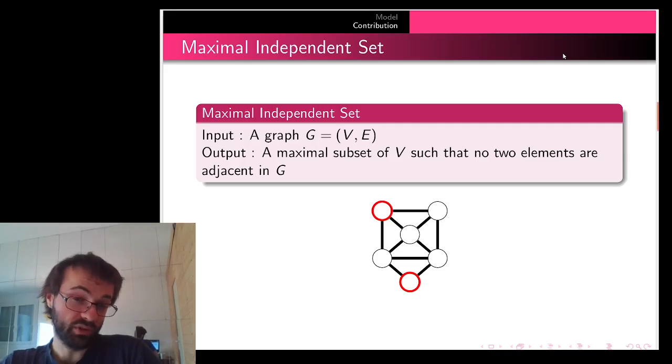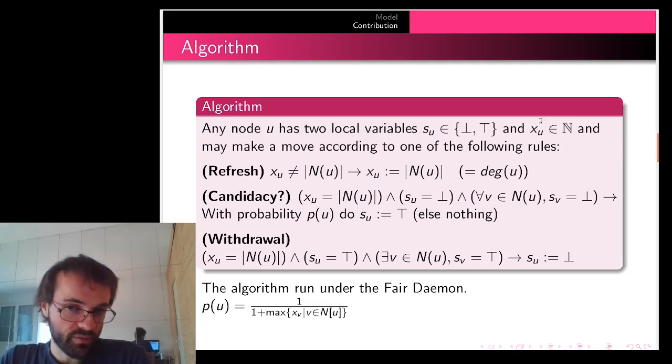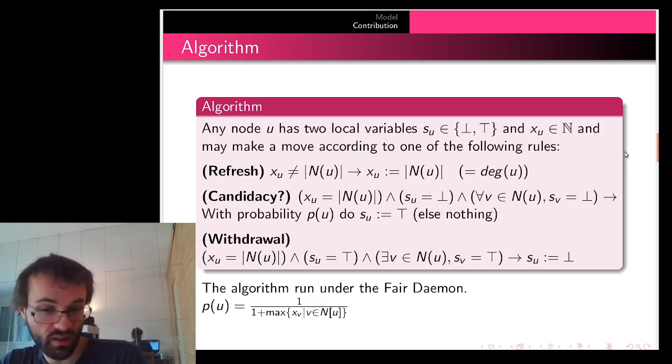We work on the problem of maximal independent set, which seeks a maximal subset of nodes so that no two elements are adjacent. Here is our algorithm to solve this problem. We have two variables: x, which represents the degree of the node in the execution, and s, which represents whether the node is or is not in the independent set, at least in a stable configuration.